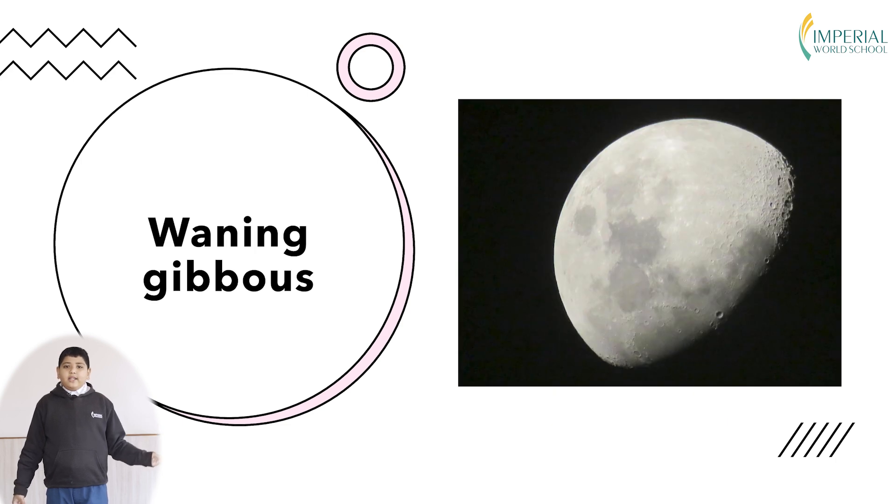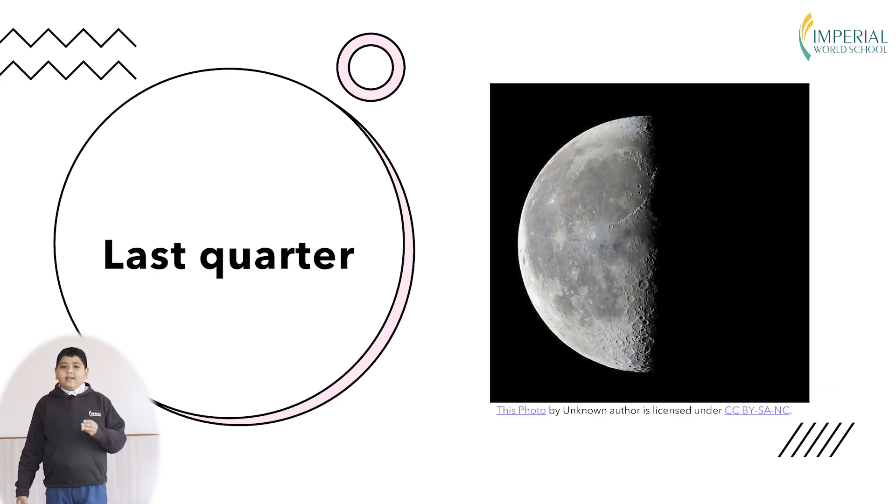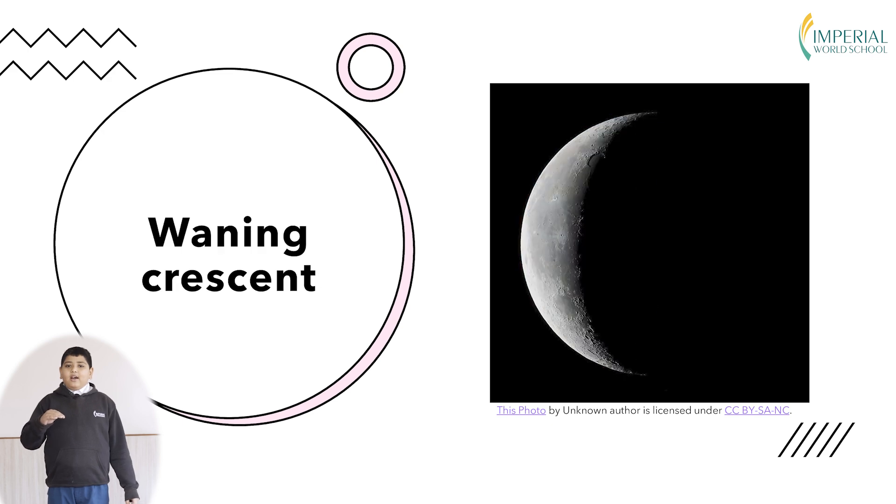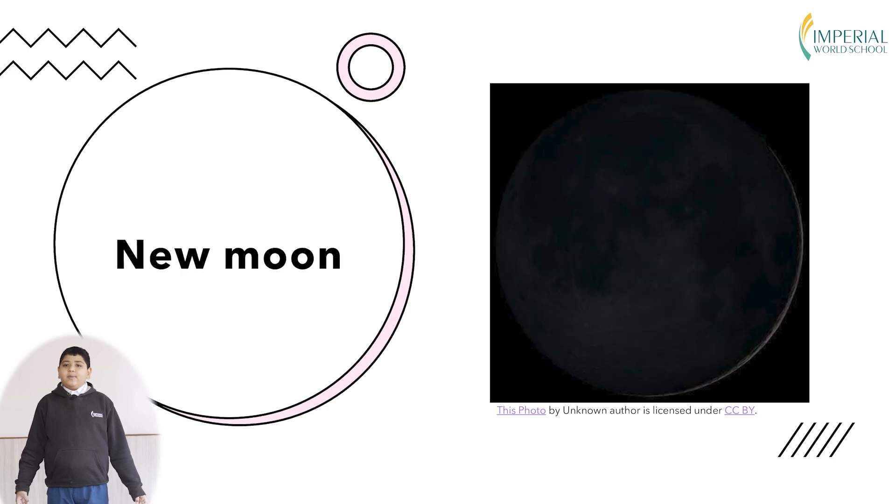First we start from the waning gibbous where we can see that a bit of the moon has disappeared. Then we have again the last quarter where we can see half of the moon has disappeared. And after that we have the waning crescent where we can see that a sickle like shape has again formed of the moon. Then we again reach back to the new moon where we can't see the moon anymore.